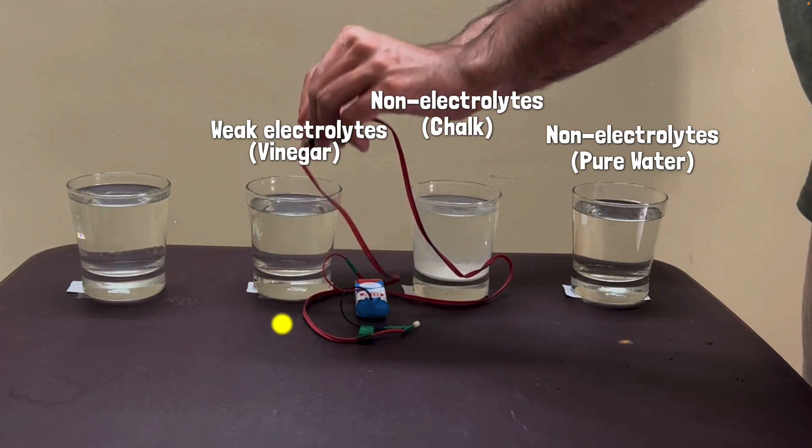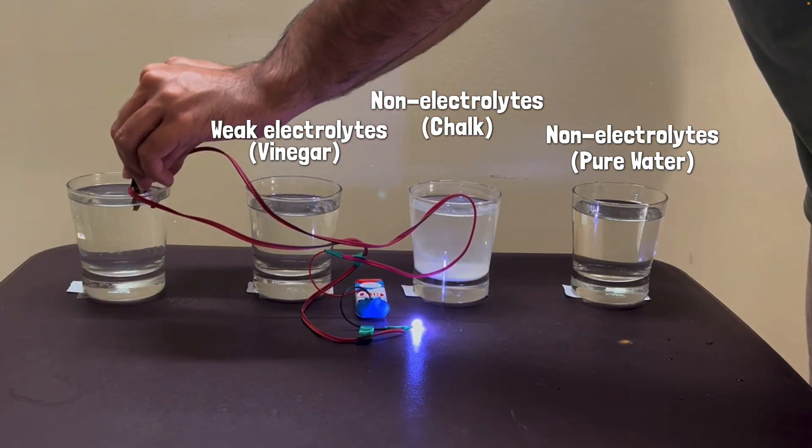And then in the final case, we get a much stronger glow over here. In fact, you can compare it with the one that we got from the vinegar, and you can see that this glow is much stronger. So there's much more electricity being passed over here, which means we can conclude that this must be a strong electrolyte. And it is indeed strong electrolyte because I just put table salt in this one.